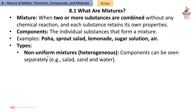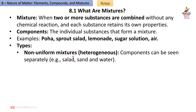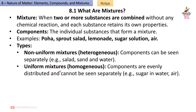Types of mixtures: Non-uniform mixtures are heterogeneous — components can be seen separately, e.g. Salad, Sand and Water. Uniform mixtures are homogeneous — components are evenly distributed and cannot be seen separately, e.g. Sugar in Water, Air.